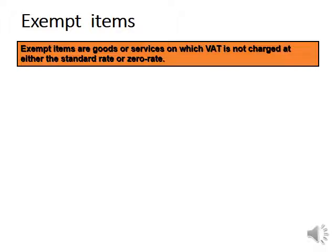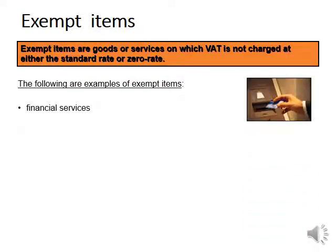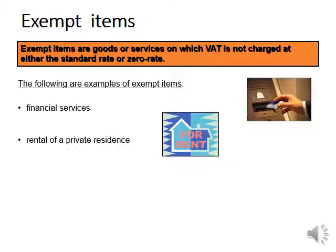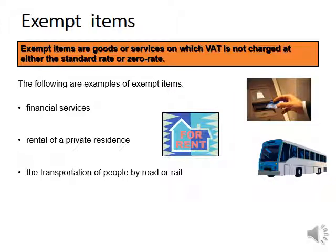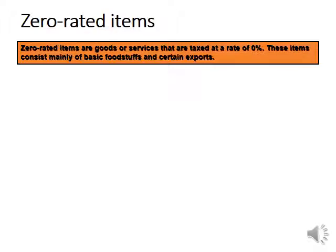Let's look at examples of exempt items. Please note: exempt is not the same as zero-rated. Examples of exempt items include financial services, the rental of a private residence, the transportation of people by road or rail, and educational services when supplied by the state. Zero-rated items are charged VAT but just at a zero rate, so they are different from exempt.